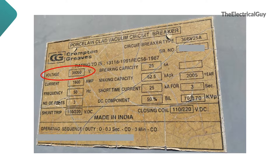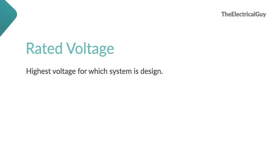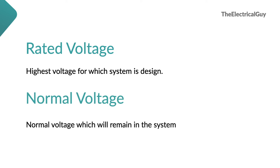Rated voltage is the highest system voltage for which the breaker is designed. This voltage is mentioned in kV-RMS or Volt-RMS and it refers to the phase-to-phase voltage of a three-phase system. People often get confused between rated voltage and normal voltage. Rated voltage is the highest voltage of the system for which the system is designed, whereas normal voltage is the voltage which remains in the system normally. So in this case, 36 kV is the rated voltage and 33 kV is its normal voltage.